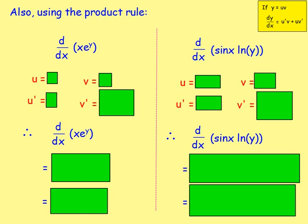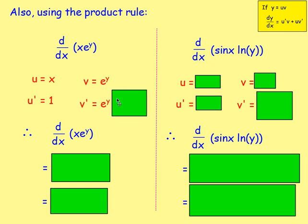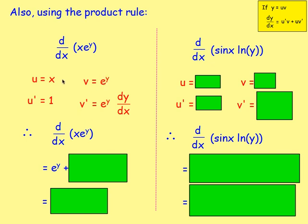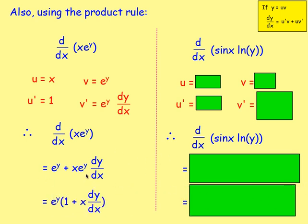Another example with the product rule: x times e to the power of y. u is x, v is e to the power of y. u' is 1, v' is e to the power of y dy/dx. So the derivative is e to the power of y plus x e to the power of y dy/dx. You should leave your answer factorised, so take out e to the power of y as the common factor: e to the power of y times the bracket (1 plus x dy/dx).